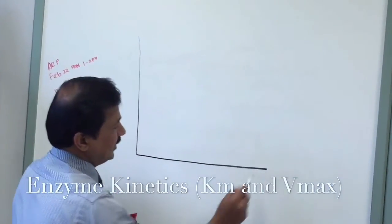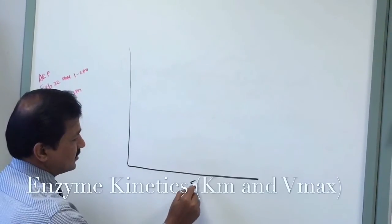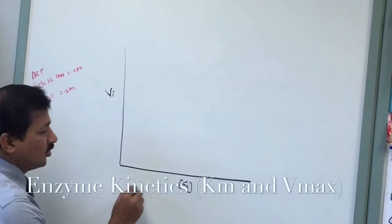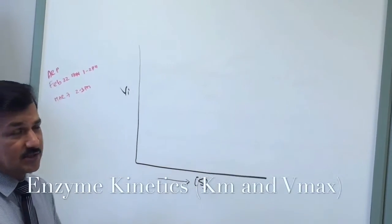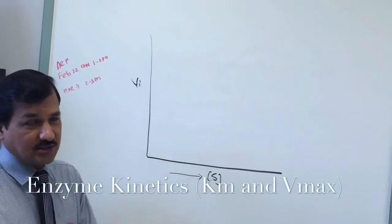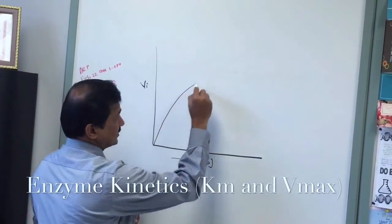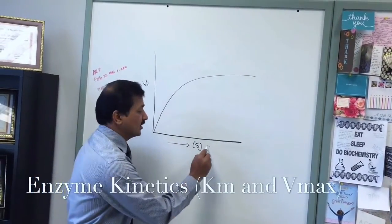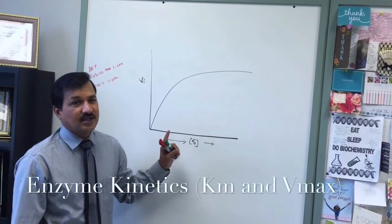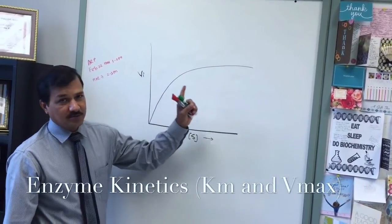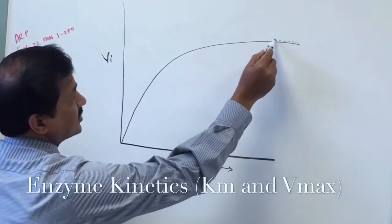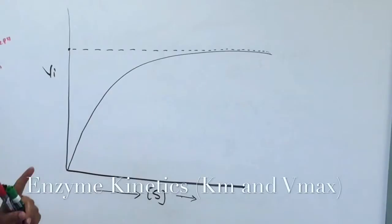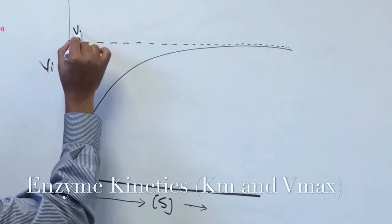Let's understand what KM is. I'm drawing a figure here with the x-axis indicating substrate concentration and the y-axis indicating initial velocity of the reaction. As you go on increasing the substrate while keeping enzyme concentration constant, your velocity curve increases and then levels off, because at some point the enzymes get saturated and reach their maximum velocity — they take a plateau stage.